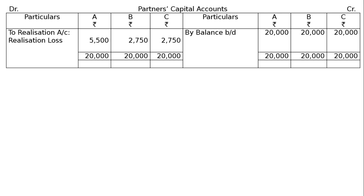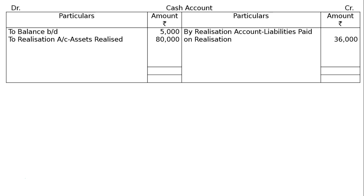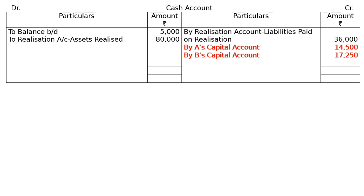We find the amount payable to A, B, and C — transferred to cash account: A rupees 14,500, B rupees 17,250, and C rupees 17,250. In the cash account: balance brought down rupees 5,000, realization account assets realized rupees 80,000. By realization account liabilities paid rupees 36,000. By A's capital account rupees 14,500, B's capital account rupees 17,250, C's capital account rupees 17,250. Both sides total rupees 85,000 — this is correct and this is the final answer.